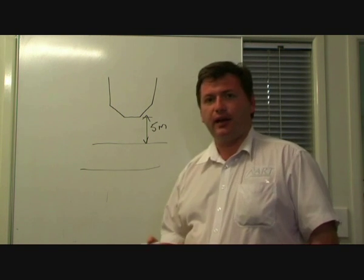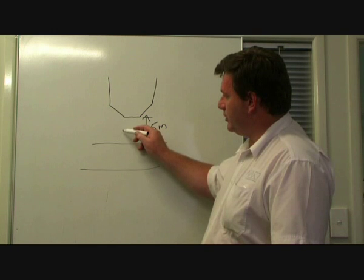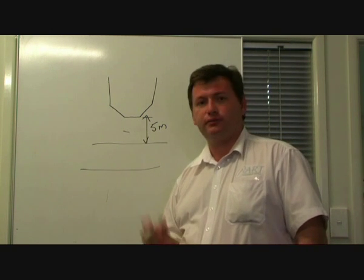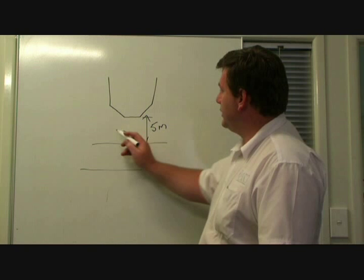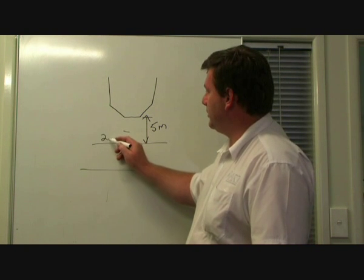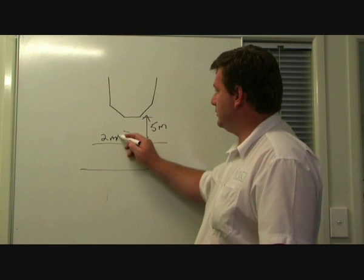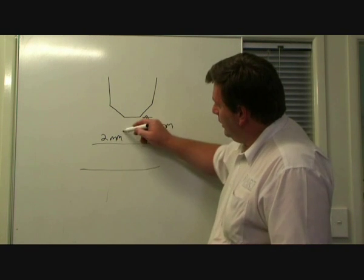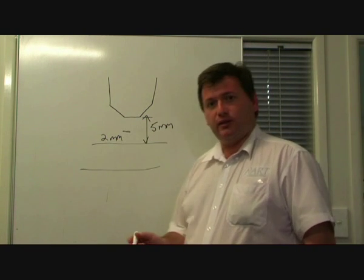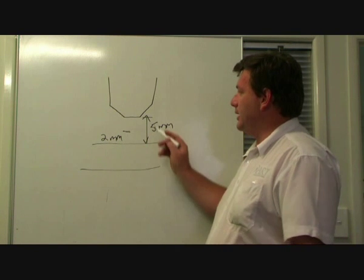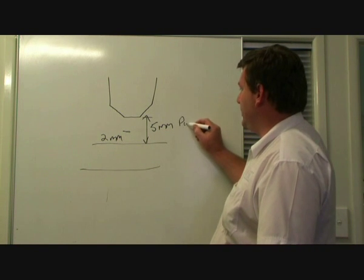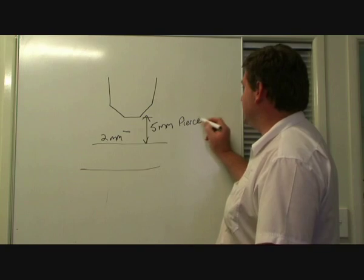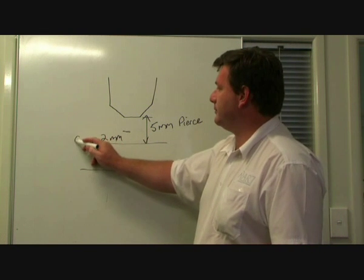The cut height is normally around 1.5mm to 3mm, depending on the material. So I'll just put that at 2mm for the cut height. What ART machines do is they actually use these two settings. This is called the pierce height, as we mentioned earlier, and this is the cut height.